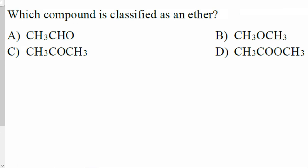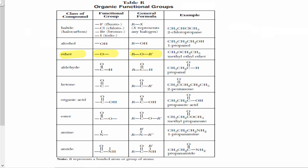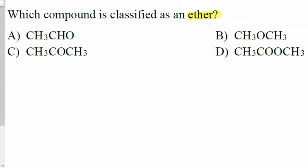The next question asks which compound is classified as an ether. To identify ether, we go to reference table R and look at the functional group or general formula for ether — it has oxygen on both sides, meaning oxygen in the center with two carbon groups on both sides. Looking at the answer choices: one option has oxygen on the extreme corner, so it's not in the center. Another option appears to have two oxygens — so those are not our answer. We need to understand the difference between the remaining options.